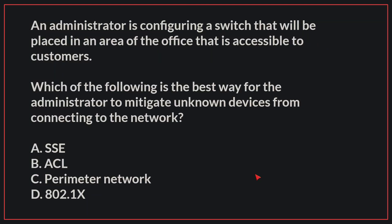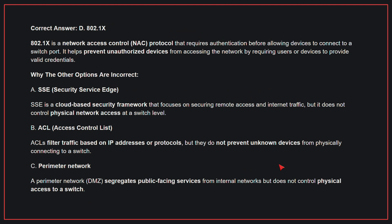An administrator is configuring a switch that will be placed in an area of the office accessible to customers. Which of the following is the best way for the administrator to mitigate unknown devices from connecting to the network? The correct answer is D, 802.1X. 802.1X is a network access control protocol that requires authentication before allowing devices to connect to a switch port. It helps prevent unauthorized devices from accessing the network by requiring users or devices to provide valid credentials.